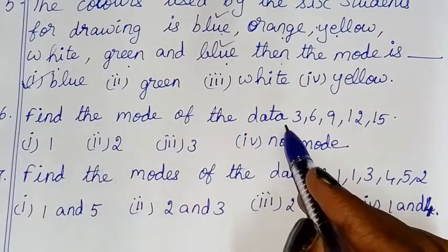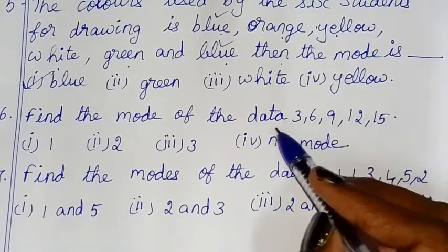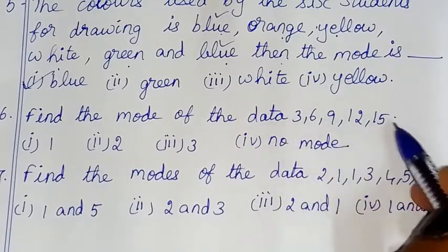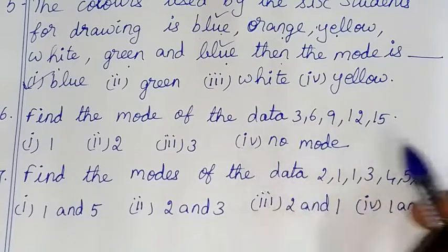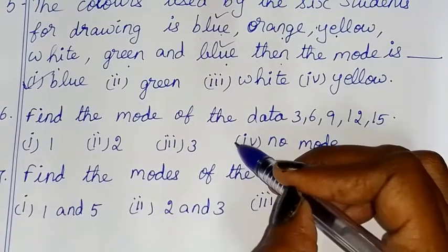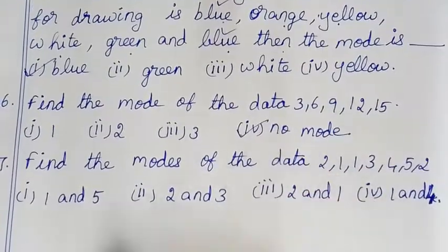Find the mode of the data: 3, 6, 9, 12, 15. Since no number repeats, there is no mode. So option four — there is no mode — is correct.